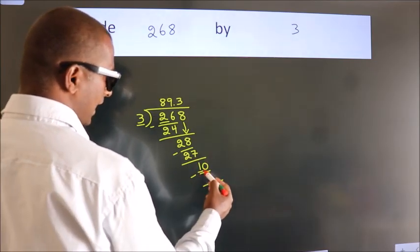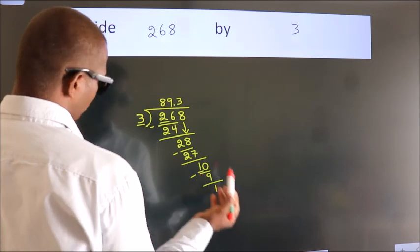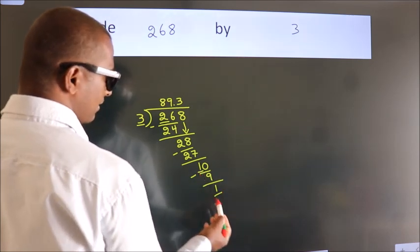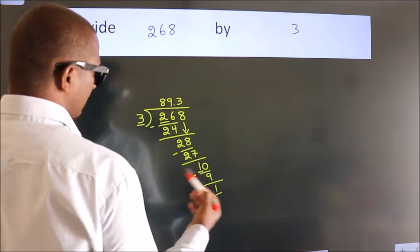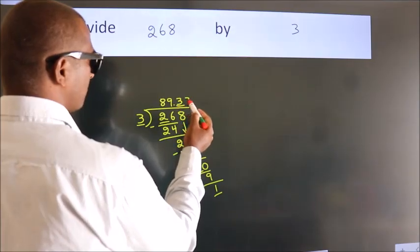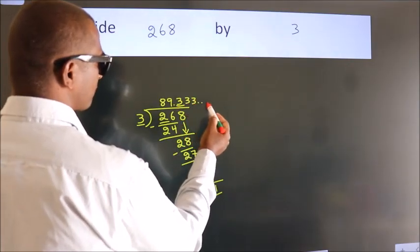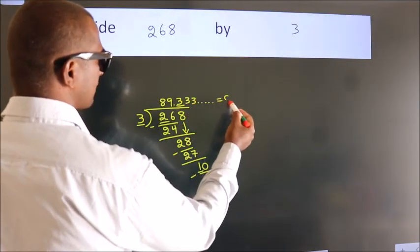Now, you observe. We had 1 here. And we got 1 again. That means, this number keep on repeating. So, this is our quotient.